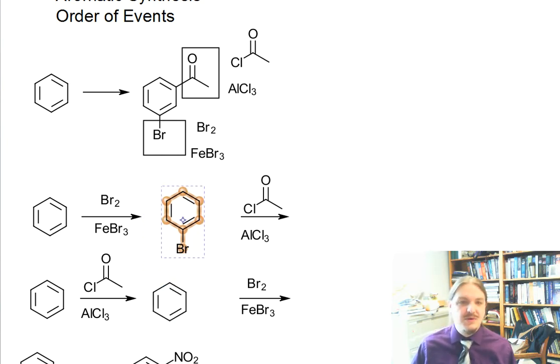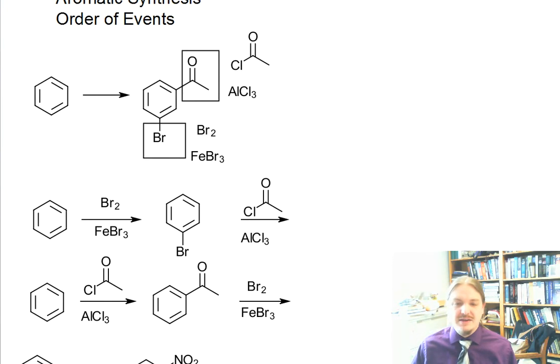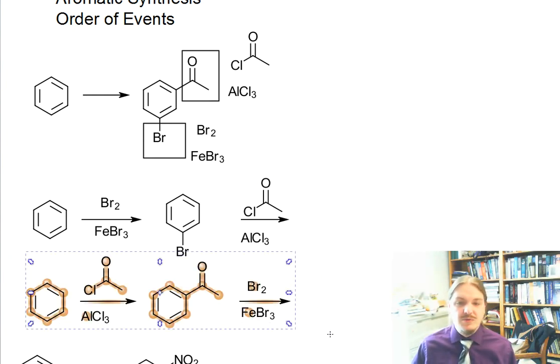And so I'm going to do that, or at least I'm going to start down that pathway. So bromination of benzene yields bromobenzene. The Friedel-Crafts reaction yields acetophenone. And then there's the question of whether the next reaction does what we want it to.